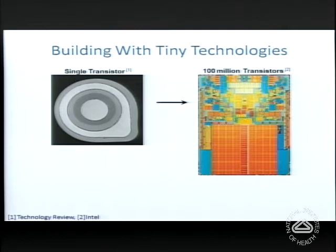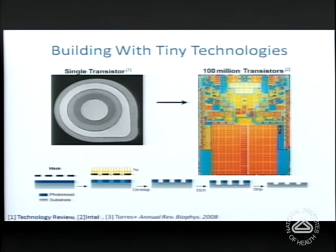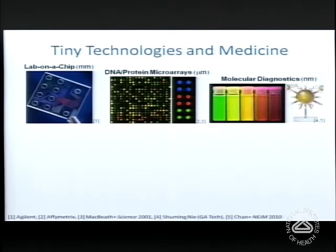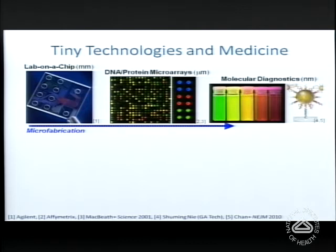The tools we've been interested in leveraging are the so-called tiny technologies. We've been interested in taking the technology that drove the computer revolution — photolithographic patterning or photolithography. Over 50 years, engineers, material scientists, and physicists made us able to go from a single transistor to over 100 million on the same footprint. You can just imagine the power of miniaturization and how far it's driven us in information science. We and others have been thinking about how this might be useful in medicine.